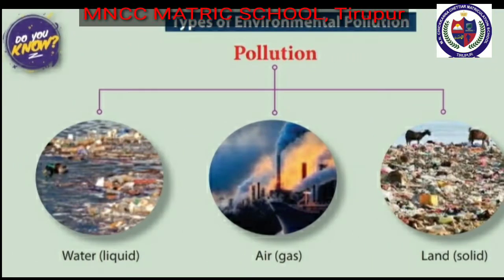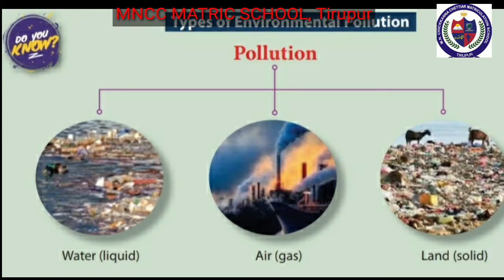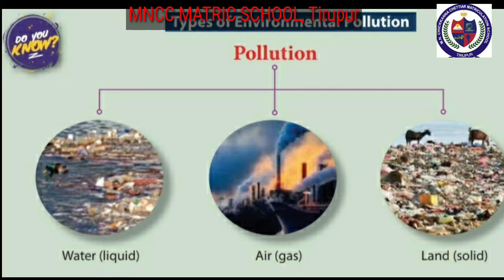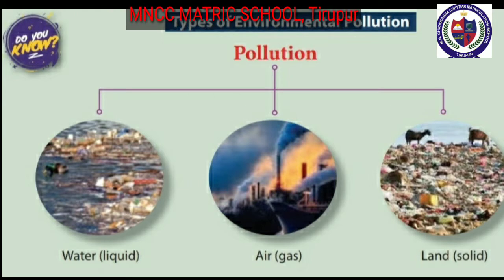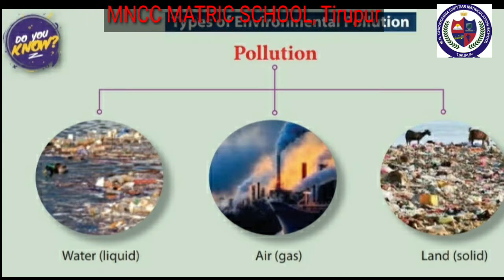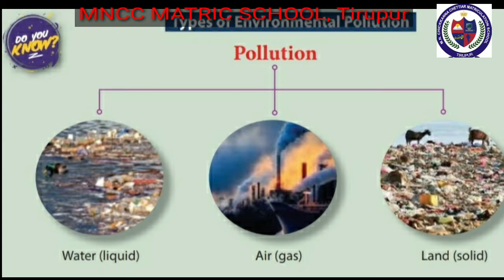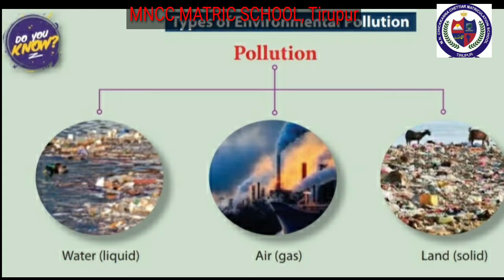Natural environment: in biology and ecology, the natural materials and living things including sunlight are called environment. There are three types of environmental pollution: water pollution, air pollution, and land pollution.